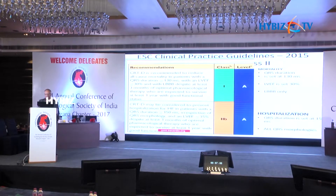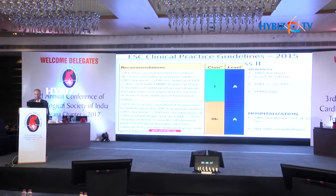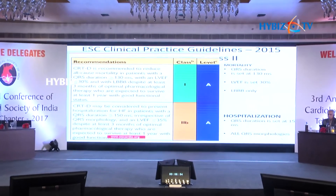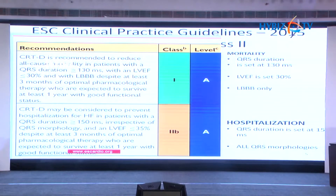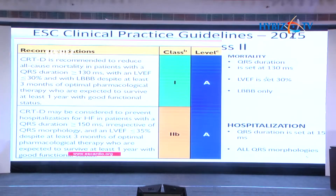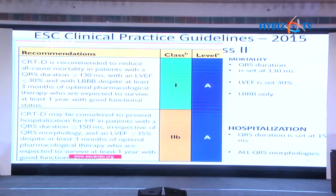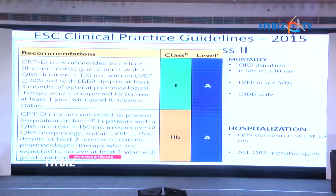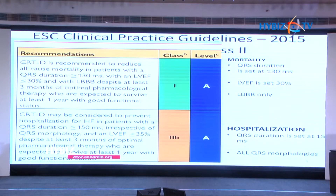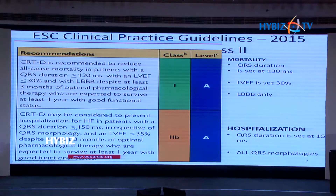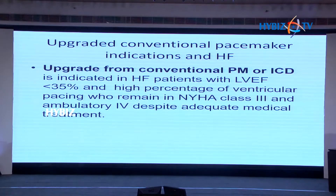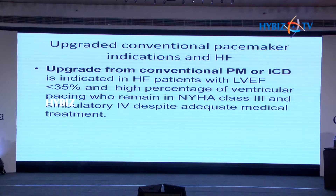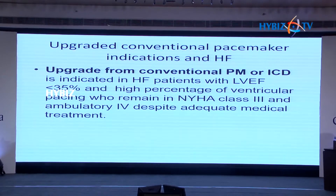Patients with a left bundle branch morphology, QRS duration of 130 milliseconds and above, and a left ventricular ejection fraction of 30 percent or less derive not only a reduction in morbidity but also mortality by giving CRT pacing alone. You need to decide when to give a defibrillator in this subset. When the QRS duration in non-LBBB morphology is more than 150, there is a significant impact on reduction of hospitalization with a little reduction in mortality.